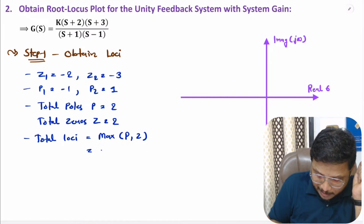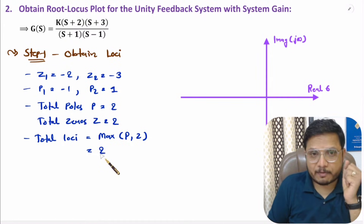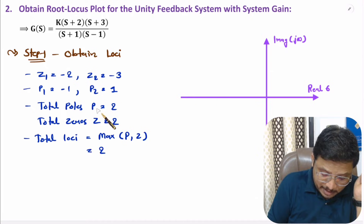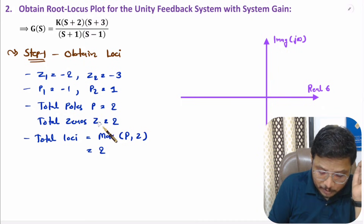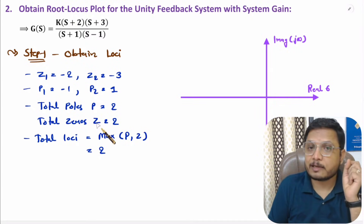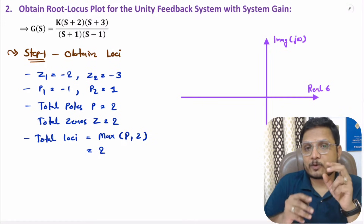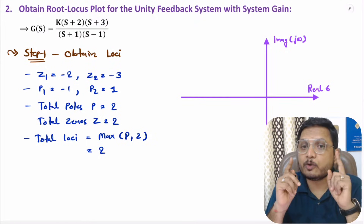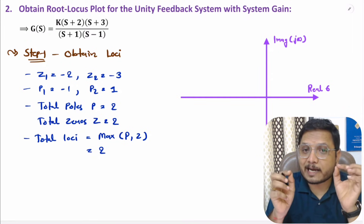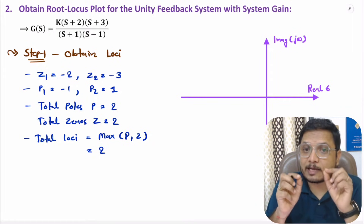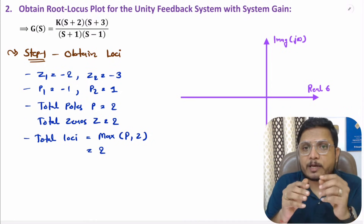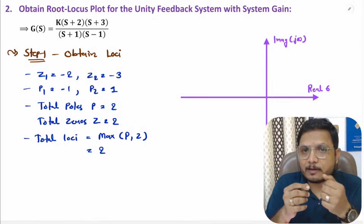Total number of loci is the maximum of P and Z, which is 2. So we will have two lines. These lines will emerge from the poles and get enclosed to the zeros. Since each pole maps to a zero, we don't have any asymptotes here.